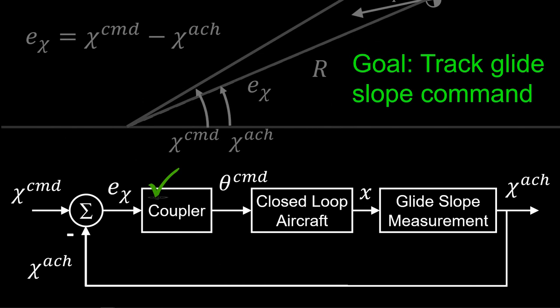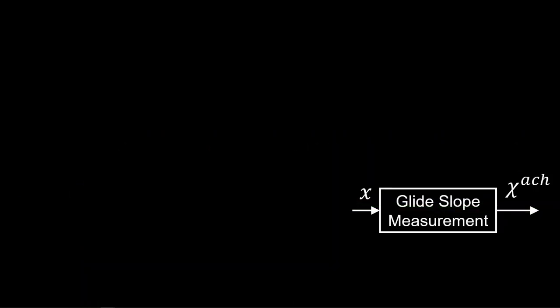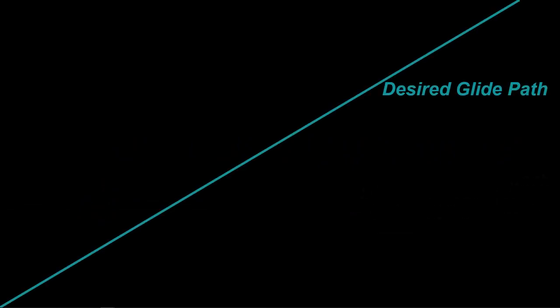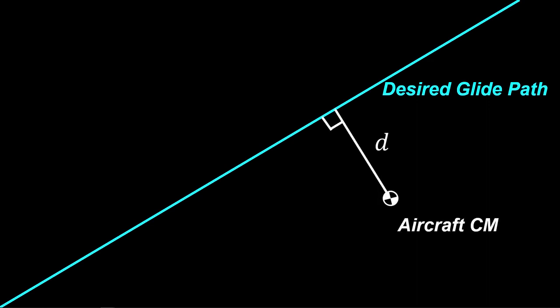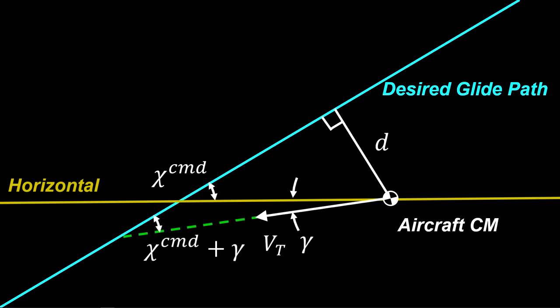We now look at the glide slope measurement. We derive a relationship between the aircraft state and the glide slope angle achieved. Starting with a desired glide path, the aircraft is off by some distance D, on a different glide slope with a flight path angle of gamma. We seek the dynamics of the distance D. With some trigonometry, we can find this angle as the commanded glide path plus the flight path angle.